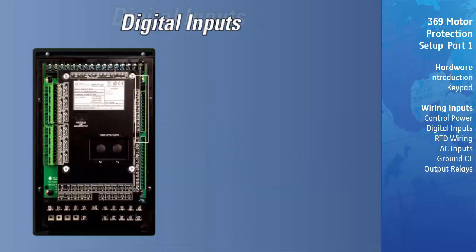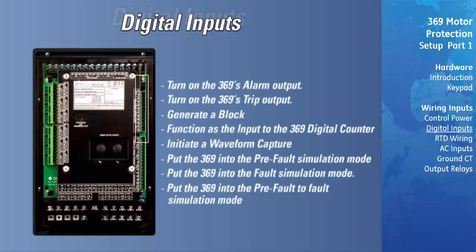Some of the 369 digital inputs have dedicated functions, while the default function of other inputs can be changed to one of the following general functions: turn on the 369's alarm output, turn on the 369's trip output, generate a block, function as the input to the 369 digital counter, initiate a waveform capture, put the 369 into the pre-fault simulation mode, put the 369 into the fault simulation mode, or put the 369 into the pre-fault to fault simulation mode.